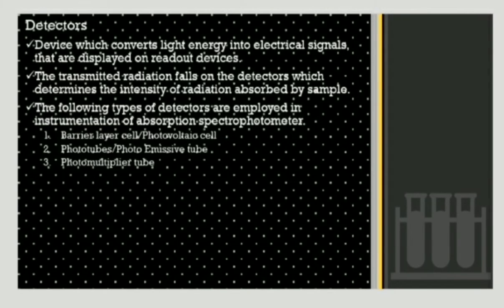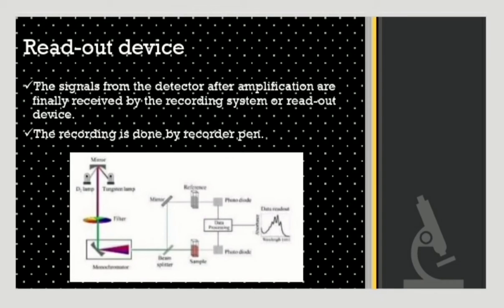The next instrumentation component is the detector — devices which convert light energy into electrical signals displayed on readout devices. The transmitted radiation falls on the detector, which determines the intensity of radiation absorbed by the sample. Types of detectors include the barrier layer cell (also known as the photovoltaic cell), photo tubes, photo emissive tubes, and photo multiplier tubes. The readout device is the final component; signals from the detector after amplification are received by the recording system. Recording is done by a recorder pen. This diagram shows the instrumentation of the complete UV visible spectroscopy setup.